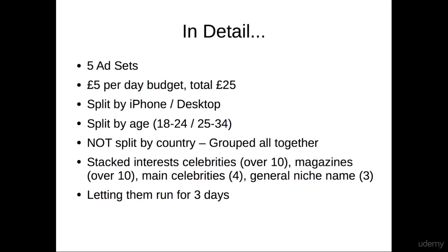I've stacked the interests, so I have a box of interests of celebrities in the niche that this product is about, and there's over 10 celebrities — I've just clicked as many as possible. The same with magazines in another box, so they have to like at least one of these celebrities and at least one of these magazines. Then I added a second celebrities box, in which I only put the key celebrities that diehard interested people that follow this niche will like.